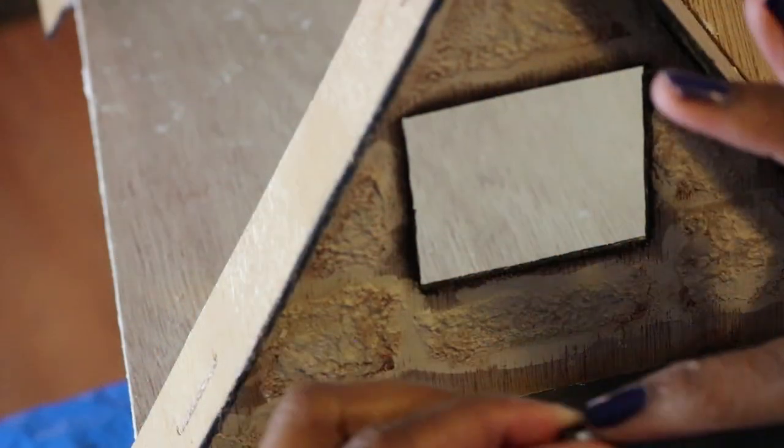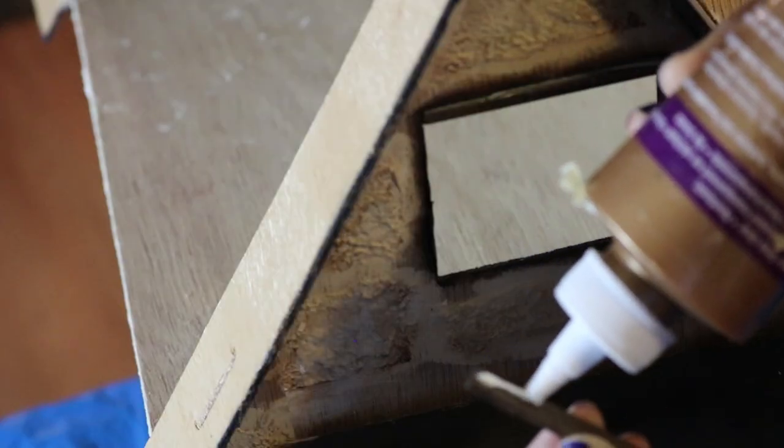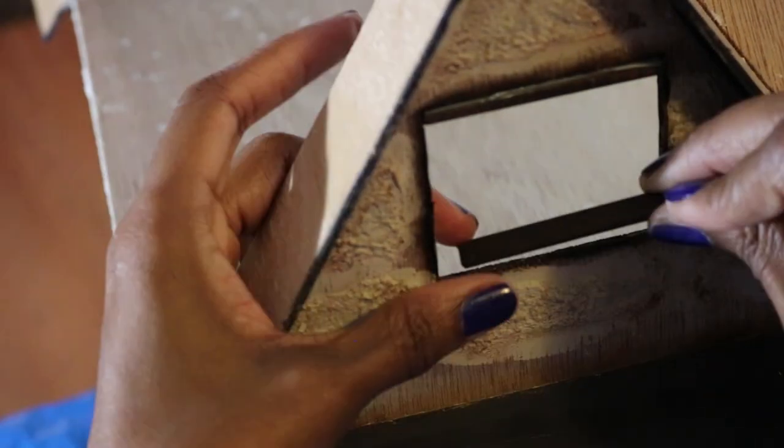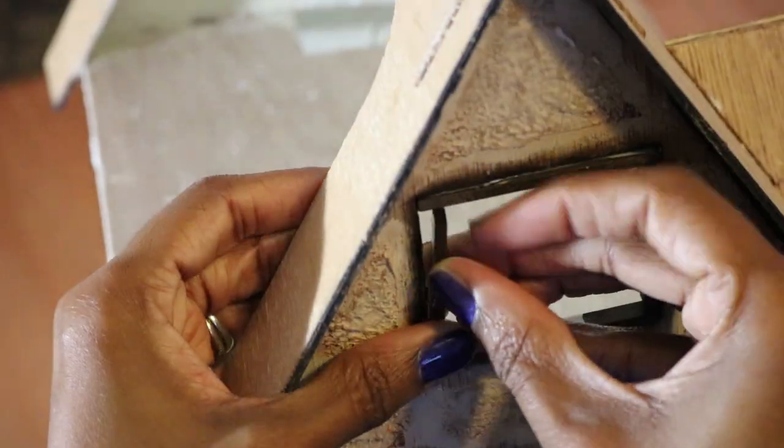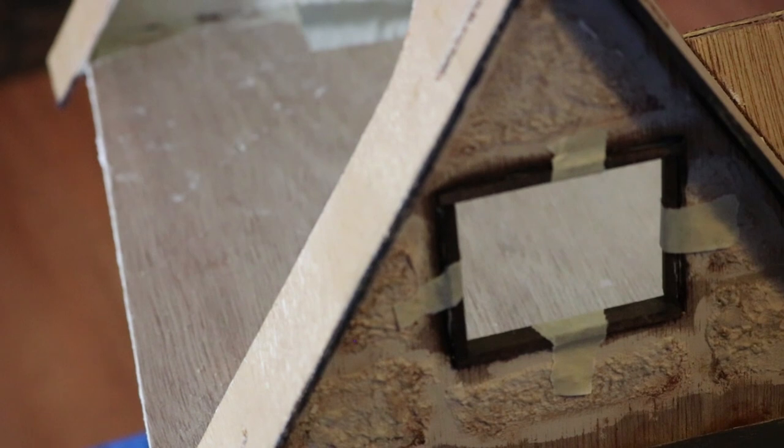Then I glue the pieces in and secure them with tape. Next, I measure and cut the two side pieces and glue and tape them in.